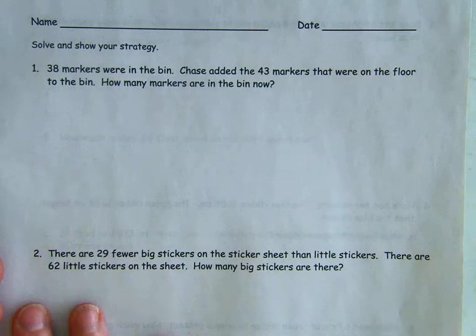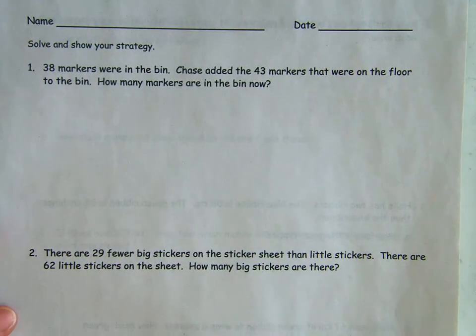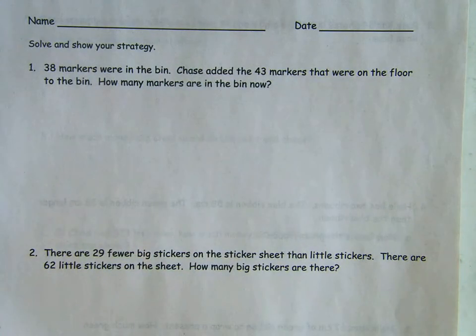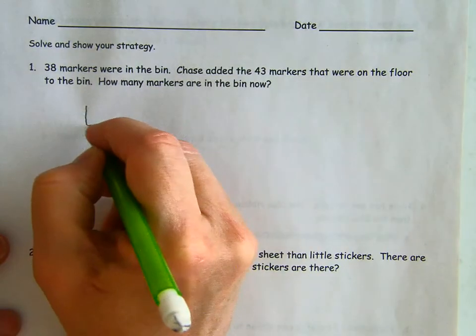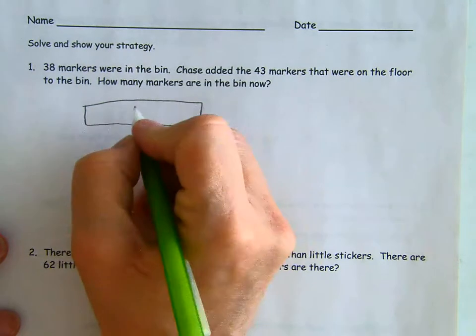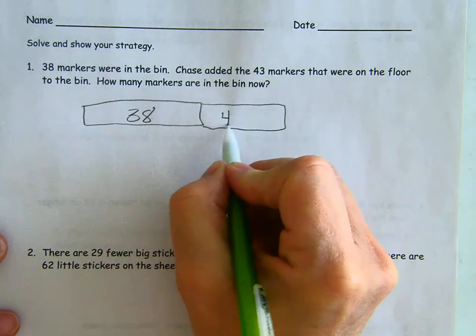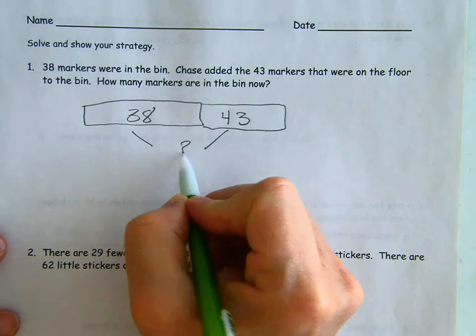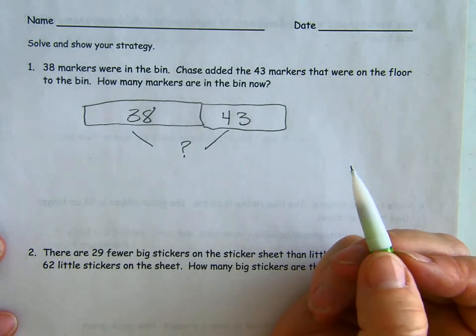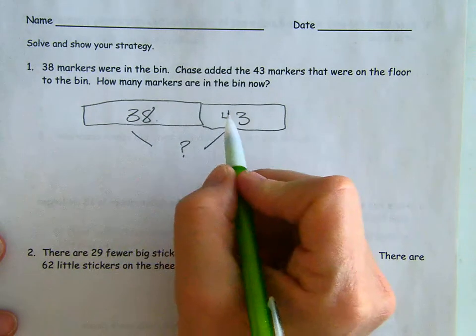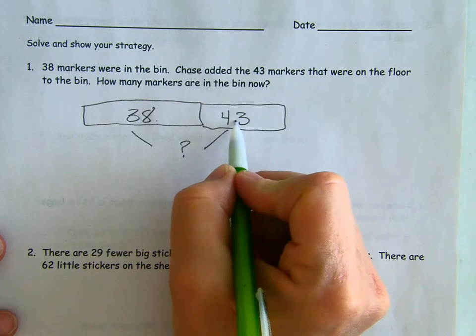Turning the page to page 21, our first problem: 38 markers were in the bin. Chase added the 43 markers that were on the floor to the bin. How many markers are in the bin now? So there were 38, now Chase added 43, and we want to know the whole thing. We're going to be adding together how many were in the bin and how many Chase added to the bin.